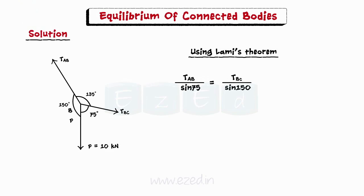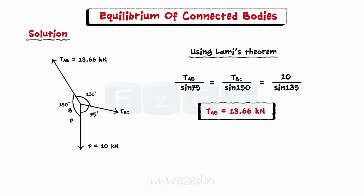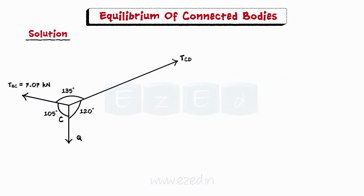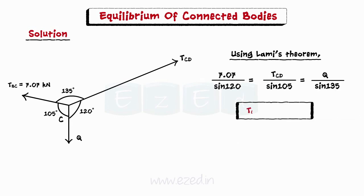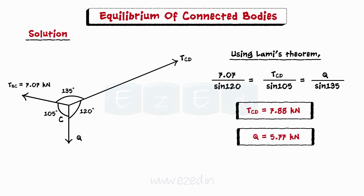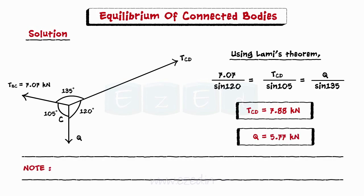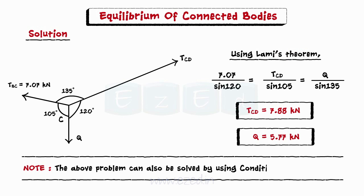On substituting and simplifying, we find tension in string AB to be equal to 13.66 kN and tension in string BC to be equal to 7.07 kN. Now we isolate joint C. Let TCD be the tension in portion CD. Using Lamy's theorem, we calculate tension in string CD to be equal to 7.88 kN, and applied force Q to be 5.77 kN. Note: this problem can also be solved using conditions of equilibrium instead of Lamy's theorem.